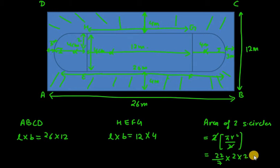So r is 2. So 2 into 2. So now you have 2 into 2, 4. 4 into 22 is 88 over 7 meter square. Similarly, we will find area of HEFG. It is 12 into 4. It is 48 meter square.